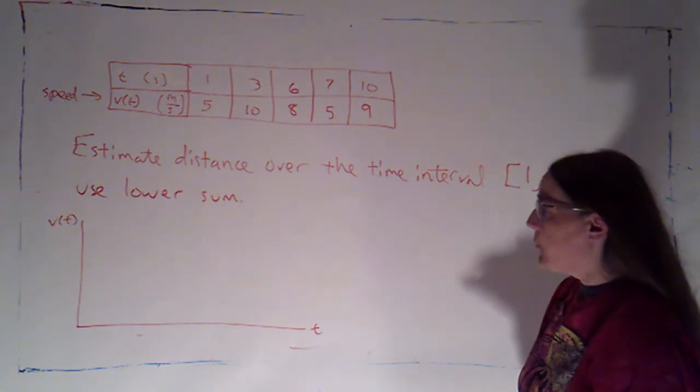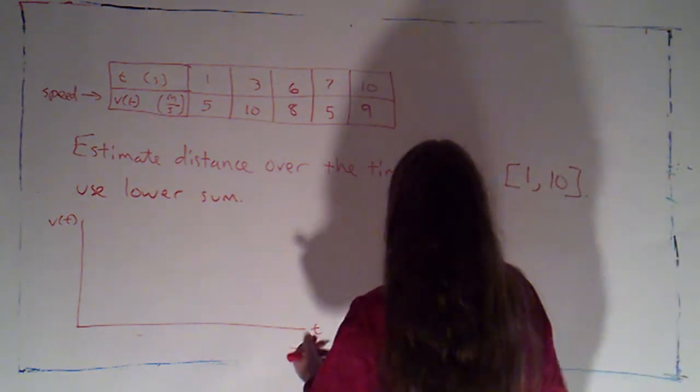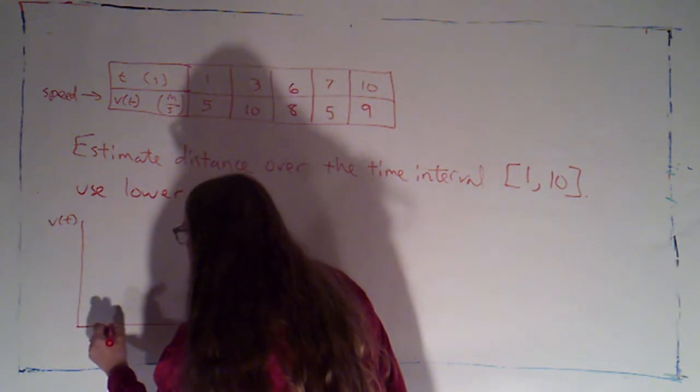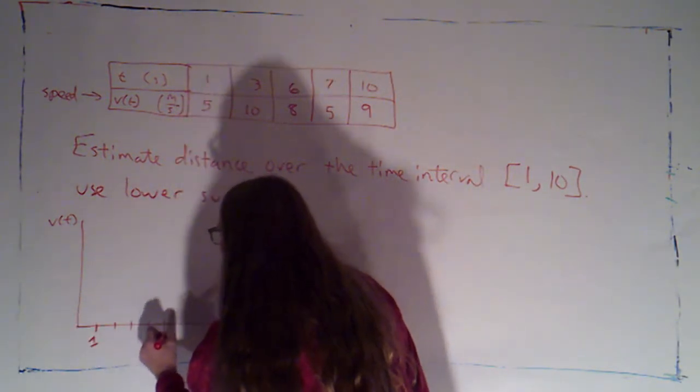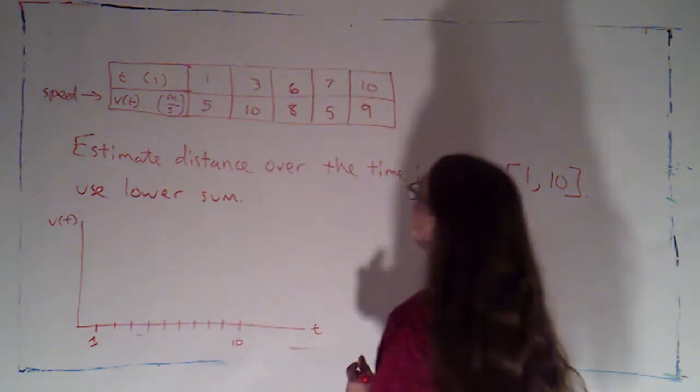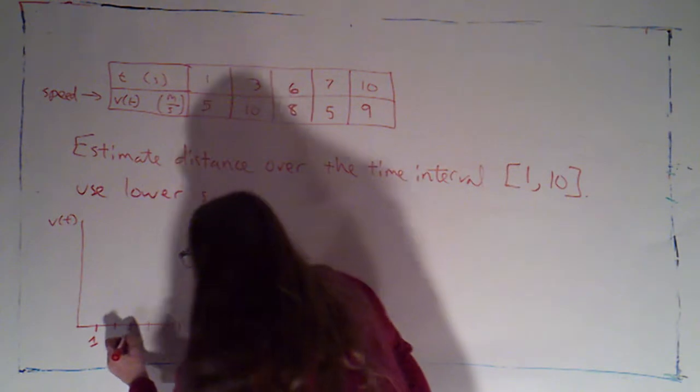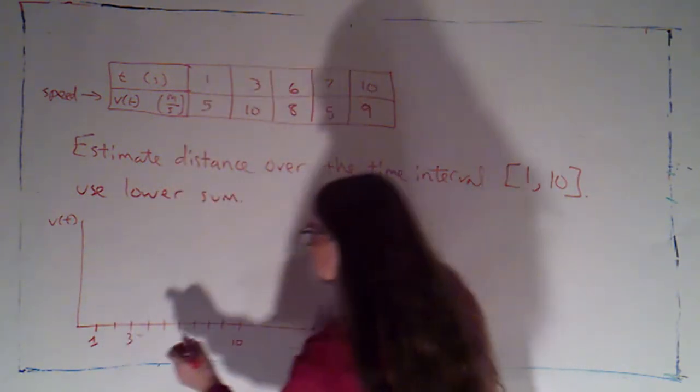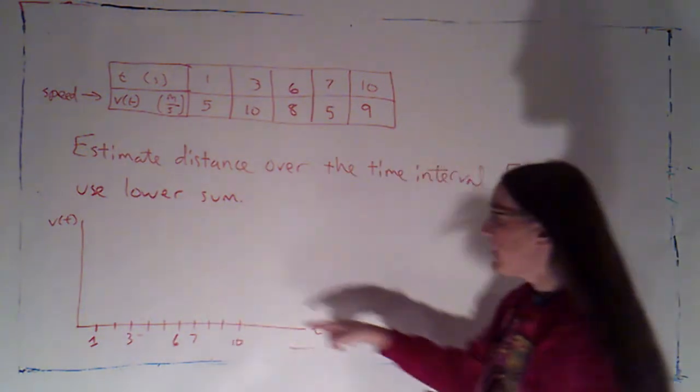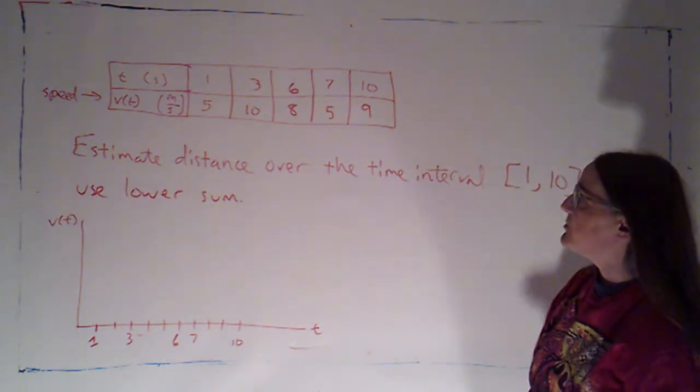And I'm just going to plot the points that I have. So it looks like we're going from time 1 to 10. So here's 1, 2, 3, 4, 5, 6, 7, 8, 9, 10. And I'm going to just mark off. This would be 3, then 4, 5, 6, 7. These are the times at which I have measurements.